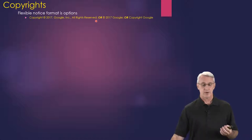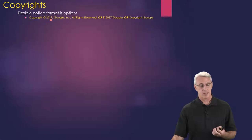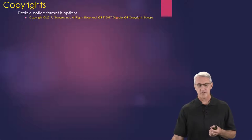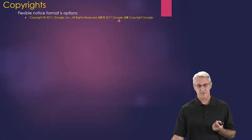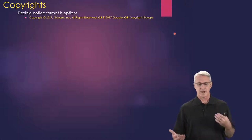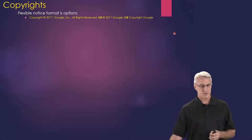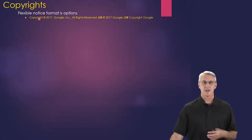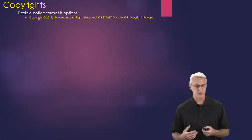You may want to put multiple dates, like from when you started claiming the copyright through whatever the current date is. Or you can use an abbreviated version like the circle C symbol, '2017 Google,' or just 'Copyright Google.' There are all sorts of different formats. If you're in doubt, use the full format if you have the room — that's the one that's most noticed.